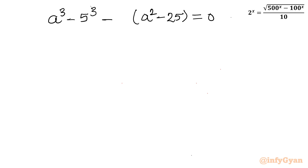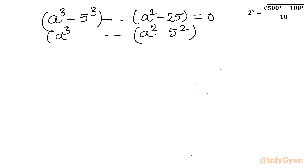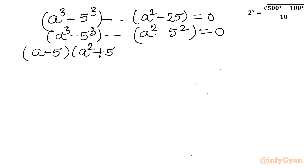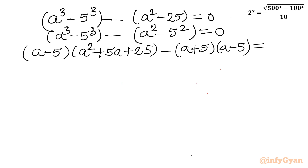Now I will apply two identities: a^3 - b^3 and a^2 - b^2. Using a^3 - b^3 = (a - b)(a^2 + ab + b^2) and a^2 - b^2 = (a+b)(a-b): so (a - 5)(a^2 + 5a + 25) - (a + 5)(a - 5) = 0.